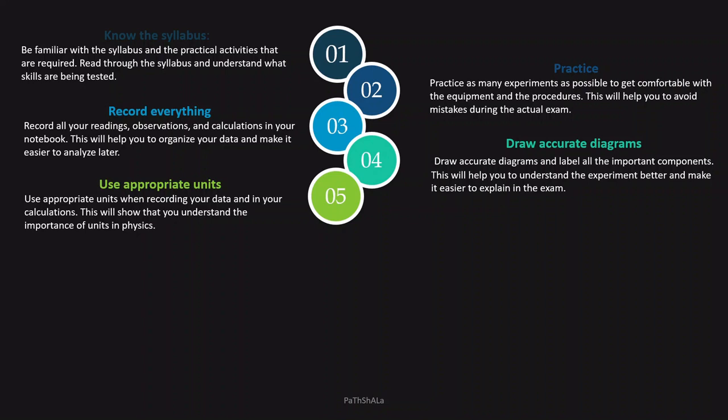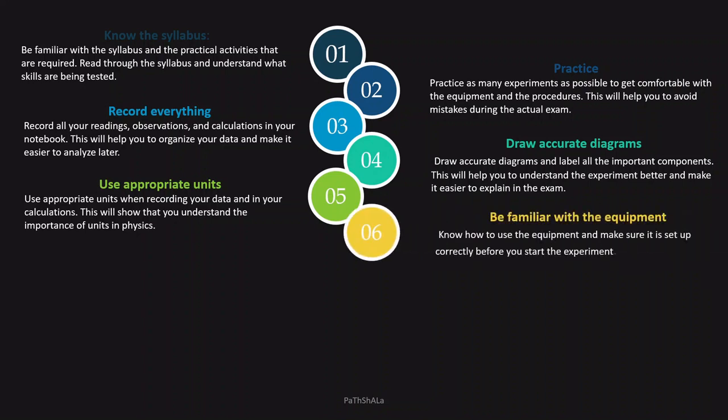Point number six is to be familiar with the equipment. You should be aware of the names and the usage of each and every piece of apparatus you are using. For example, if you're using a screw gauge, you should know this is a screw gauge and how to read it. Know how to use the equipment and make sure it is set up correctly before you start the experiment.